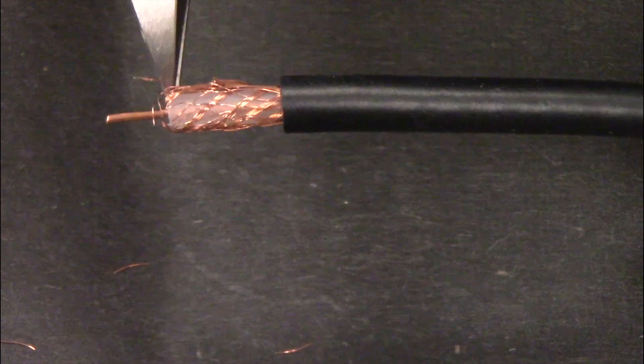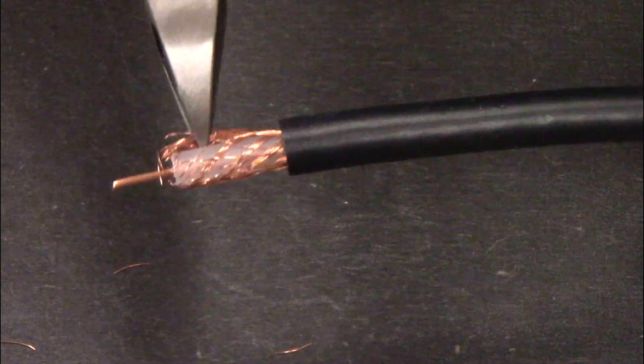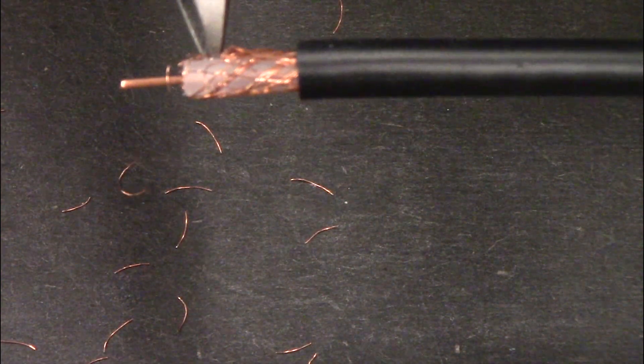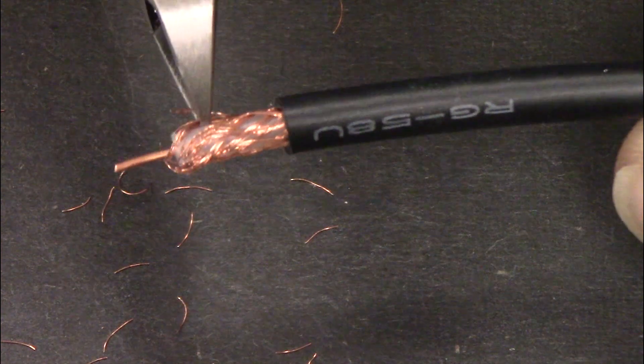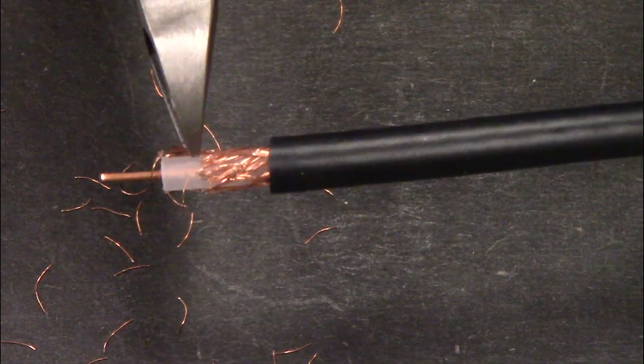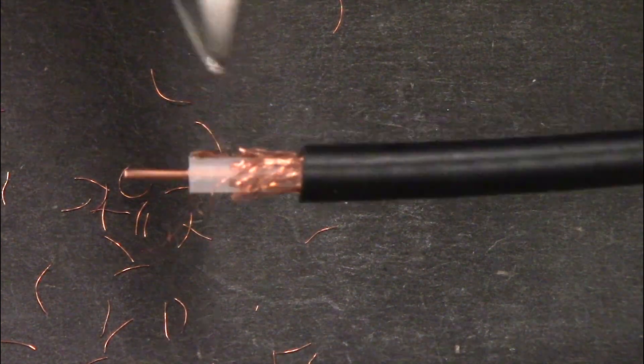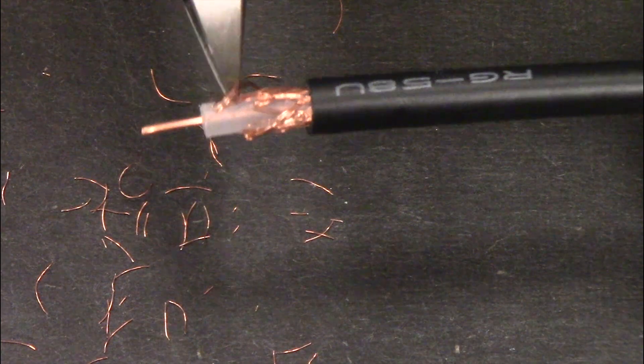Trim the shielding back, leaving approximately 3.7 millimeters of shielding left. Make sure the center conductor is free of any wires.